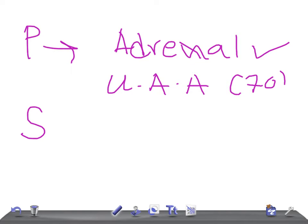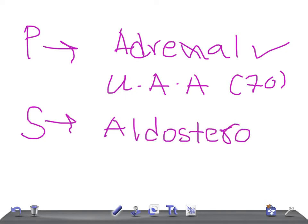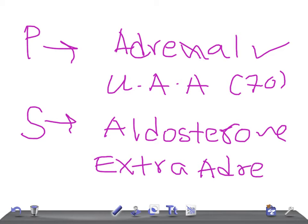In secondary hyperaldosteronism, the aldosterone levels are raised, but the cause is not within the adrenals. The cause is extra-adrenal — something outside is stimulating the adrenals to secrete more aldosterone.